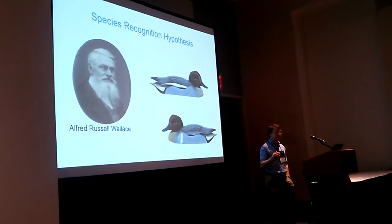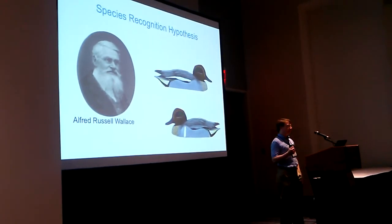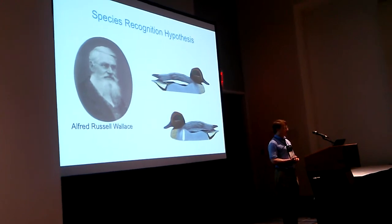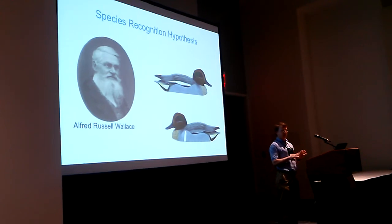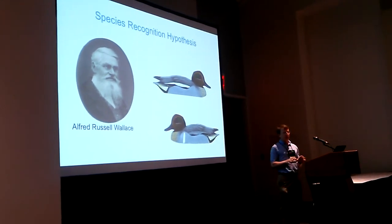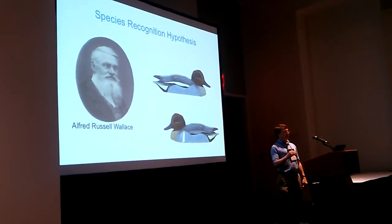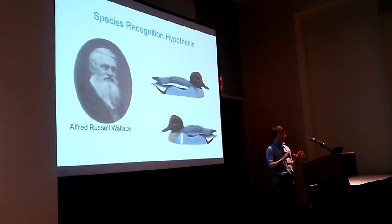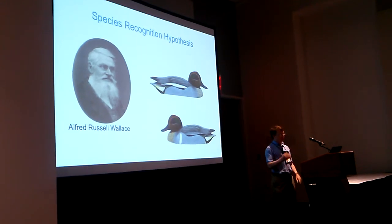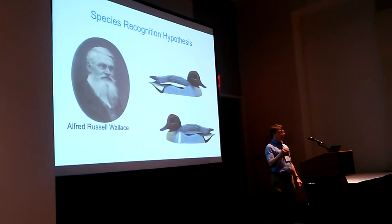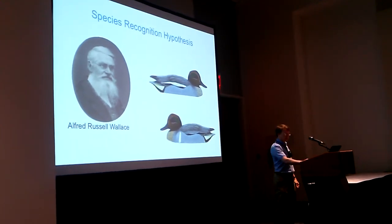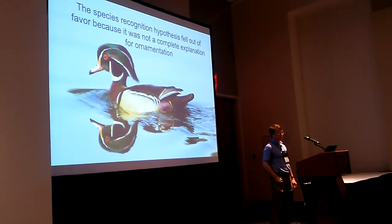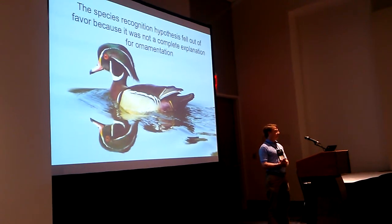Let me outline what I think are the dominant theories to explain female choice and male ornaments. First, there's the species recognition hypothesis - actually the first complete explanation for female choice. Alfred Wallace realized that the worst mistake a female can make is to mate outside of species boundaries. Wallace proposed that females benefit by finding traits that signal species identity, and then males evolve those traits. Wallace thought this explained basically the whole realm of ornamentation. This idea was very successful - the default explanation for sexual selection for about 80 years.